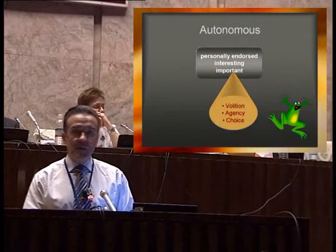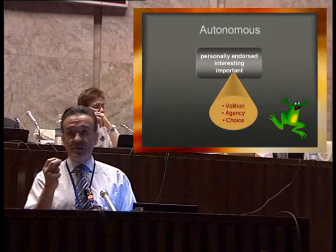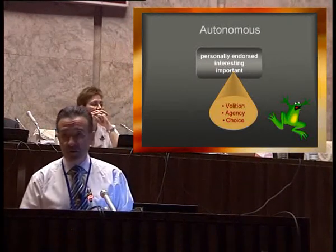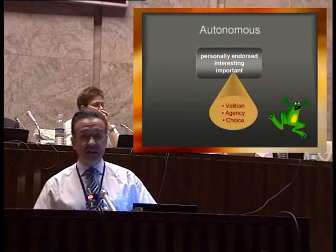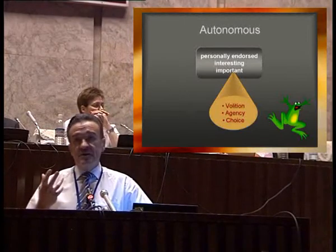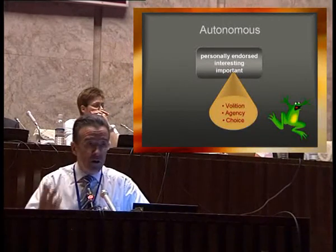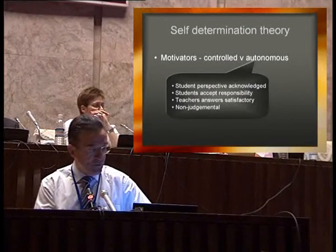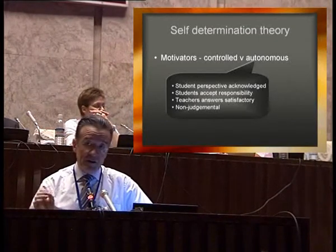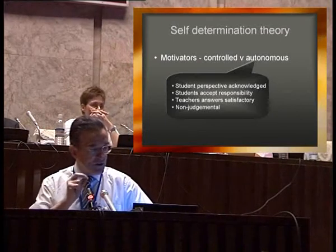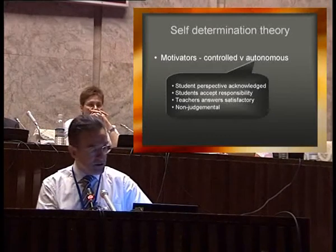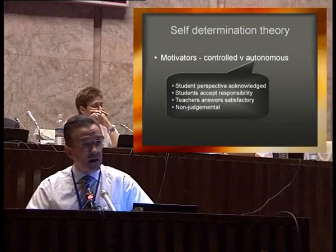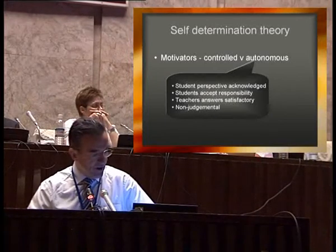Autonomous motivators, on the other hand, are things that are personally endorsed by the students. The student learns them not because they're told they have to, or in order to pass the exams, but because intrinsically they find them interesting and they think they're important. That is characterized by volition, by agency, and by choice — the student is learning because they want to learn, because they are choosing these things to learn. Autonomous motivation, compared to controlled motivation, produces greater understanding of the material, better performance in the student afterwards, stronger feelings of competence, enhanced creativity, and a whole list of other advantages.